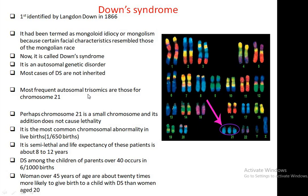Among the children of parents over 40 years of age, Down syndrome occurs in 6 per 1000 births. Women over 45 years of age are about 20 times more likely to give birth to a child with Down syndrome than women aged 20. That means the chances of Down syndrome are proportionally increased with the age of the woman.